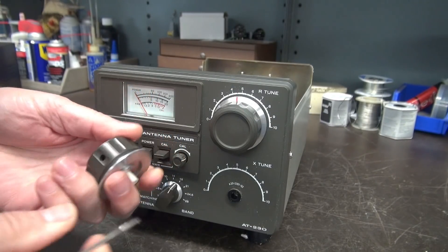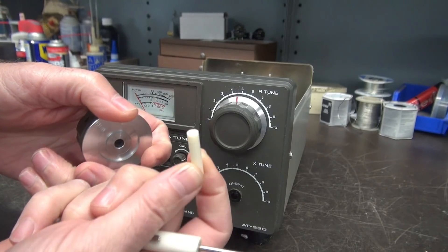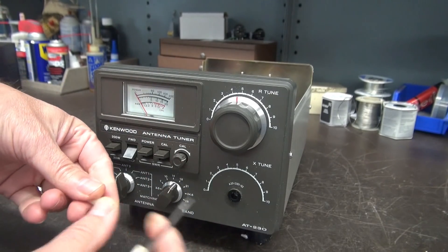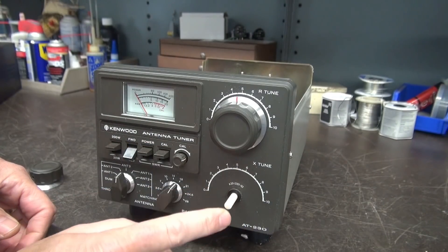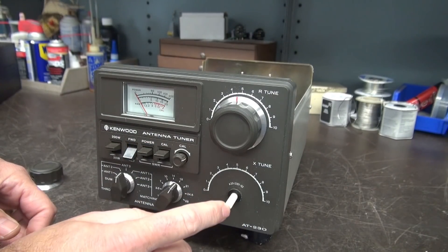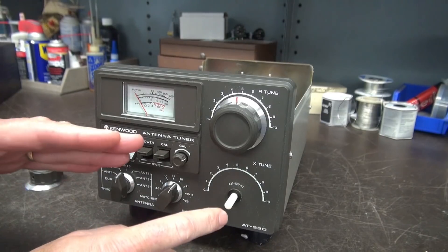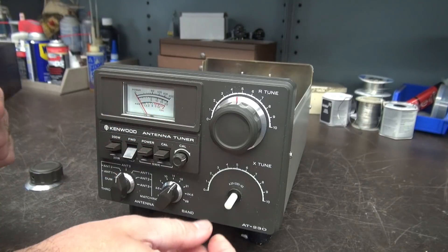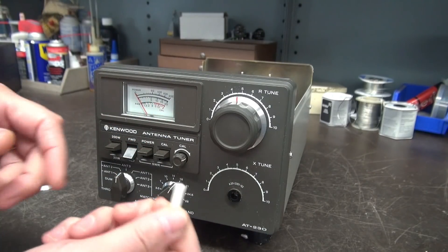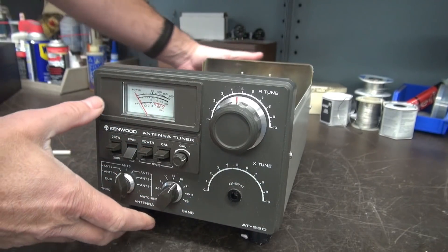If you undo the little set screw here, that plastic shaft pops right out, goes back into this hole and hits the shaft of the tuning cap. I thought there's no way it would have been a plastic shaft. There must be some kind of coupler and this is just an insulator, right? Nope, it's not the case.